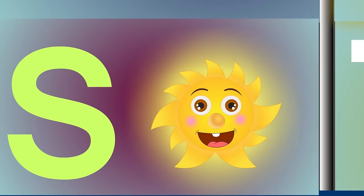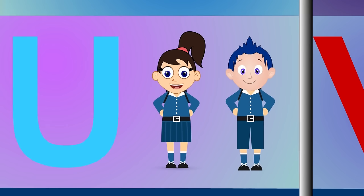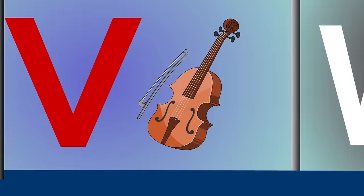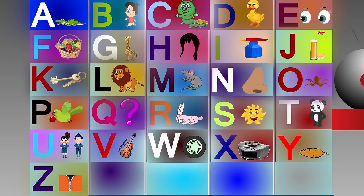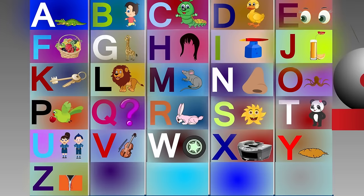Q for question mark, k-k-question mark. R for rabbit, r-r-rabbit. S for sun, s-s-sun. T for teddy bear, t-t-t-teddy bear. U for uniform, u-u-u-uniform. V for violin, v-v-violet. W for wheel, w-w-wheel. X for the rocks, z-z-z rocks. Y for yow, y-y-yow. Z for zip, z-z-zip. This is a phonic song, come sing with me. This is a phonic song, come sing with me.